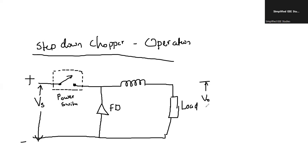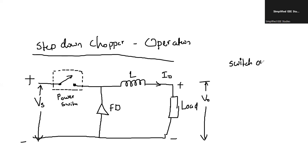Voltage across the load is V0. This is the circuit diagram of step-down chopper. The current which is passing to the load we call I0. We can mention the polarity — positive, negative. First of all, the switch is ON. Two conditions are there — how does it work? First case: we need to explain whenever the switch is ON. During the ON condition, what is going to happen?